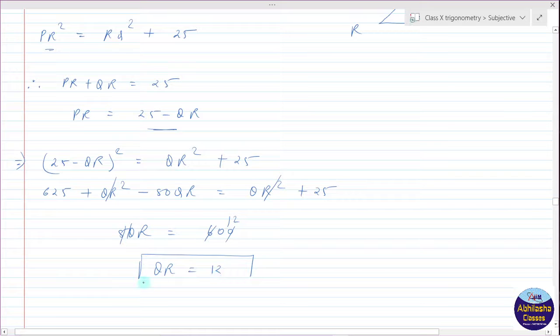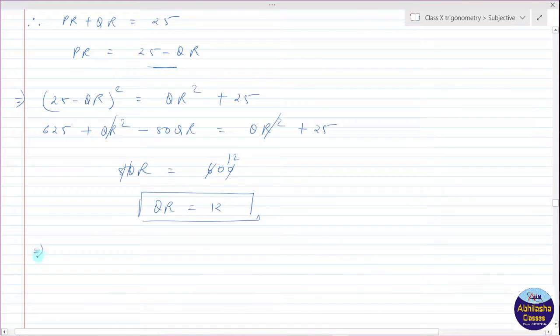And PR, we want PR, equal to 25 minus QR. So we have PR equal to 25 minus QR, so we have 25 minus 12, and PR equal to 13. So PR.